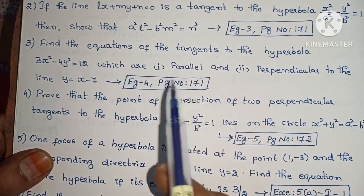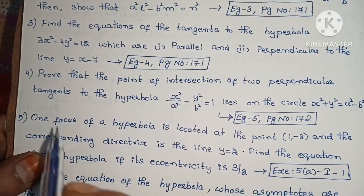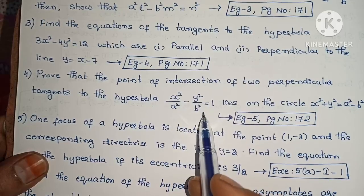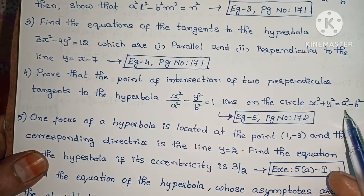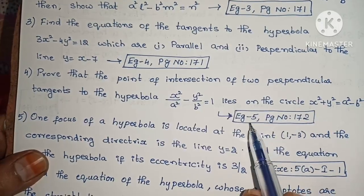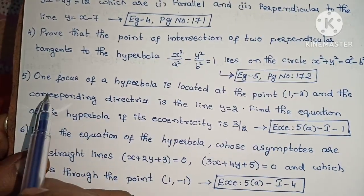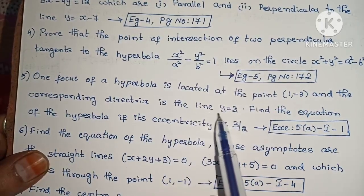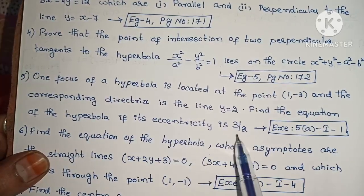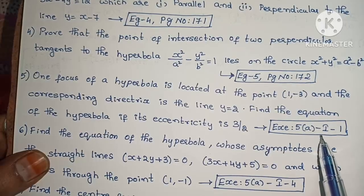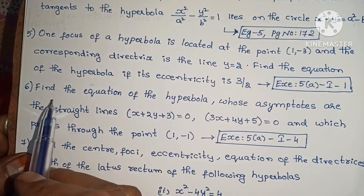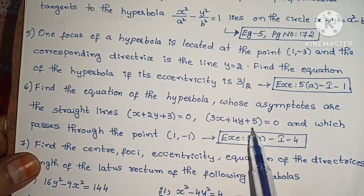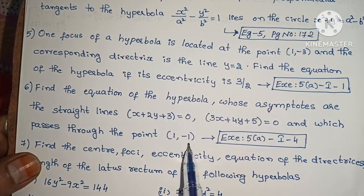Example 4, page number 171. Next, prove that the point of intersection of two perpendicular tangents to the hyperbola x²/a² − y²/b² = 1 lies on the circle x² + y² = a² − b². Example 5, page number 172. Next, one focus of a hyperbola is located at the point (1, −3) and the corresponding directrix is the line y = 2. Find the equation of the hyperbola if its eccentricity is 3/2. Exercise 5(a), Roman numeral I, problem 1. Next, find the equation of the hyperbola whose asymptotes are the straight lines x + 2y + 3 = 0 and 3x + 4y + 5 = 0, and which passes through the point (1, −1). Exercise 5(a), Roman numeral I, problem 4.